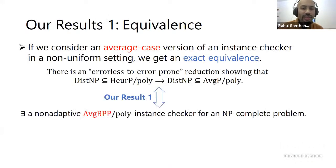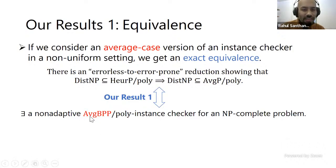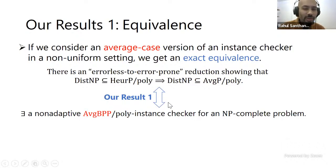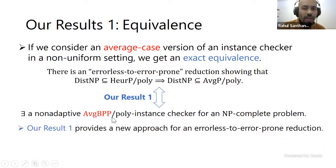Our first result is an equivalence between reductions from errorless to error-prone average case complexity and a certain notion of instance checker — a non-adaptive average-BP/poly instance checker. These two notions are actually equivalent — we get an exact equivalence. In the previous slide I suggested one direction going from instance checkability to a reduction, but you can show the other direction too if you relax the notion of instance checkability.